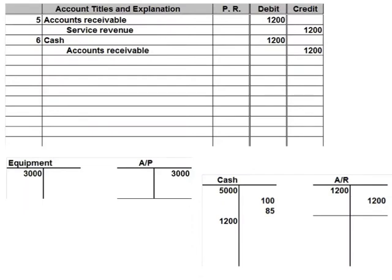Let's look at number seven. I have a portion of our journal entry and some T-accounts at the bottom. Number seven says: paid $3,000 cash for the chainsaws and other trimming equipment purchased in number two. In number two, we purchased that equipment on account for $3,000. When we gain an asset — equipment — that is a debit, because equipment is an asset account with a debit balance.